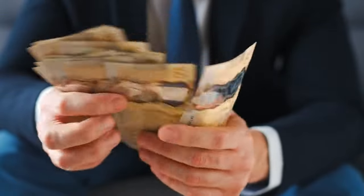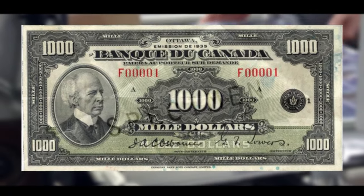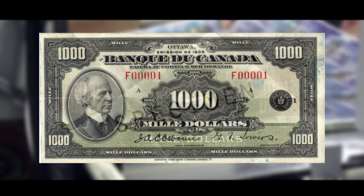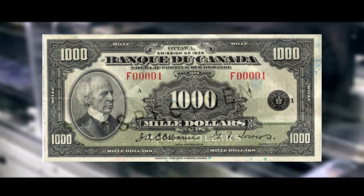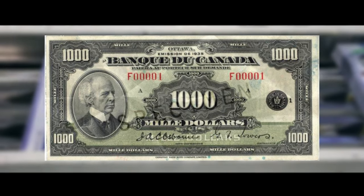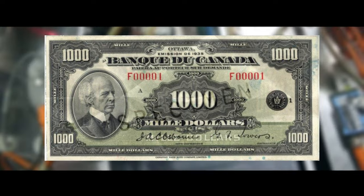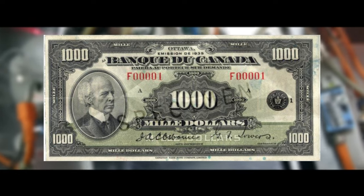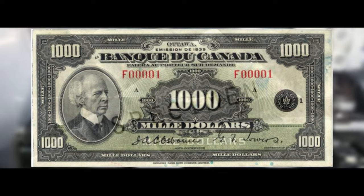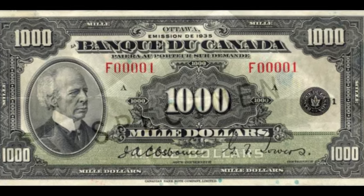The Canadian $1,000 bill was first introduced in the year 1935 and the design of this banknote changed several times over the years, incorporating different portraits and scenes, until it was officially discontinued in the year 2000 due to organized crime and money laundering.